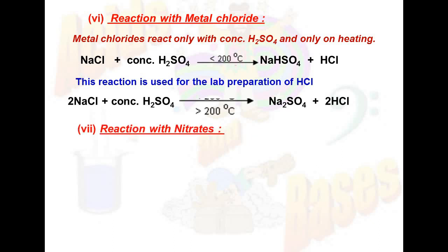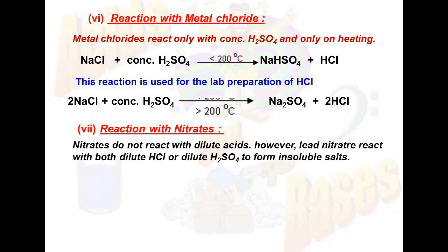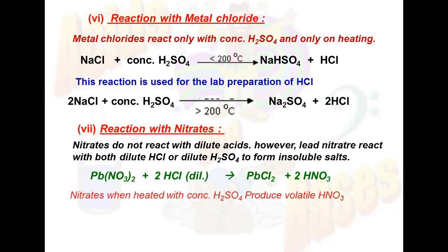The next reaction of acid is with nitrates. Nitrates do not react with dilute acids. However, lead nitrate reacts with both dilute HCl and dilute sulfuric acid to form insoluble salts. For example, lead nitrate reacts with HCl to give white precipitate of lead chloride plus HNO3. Nitrates when heated with concentrated sulfuric acid produce volatile nitric acid. For example, potassium nitrate reacts with concentrated sulfuric acid on heating to give potassium bisulfate and vapors of HNO3.